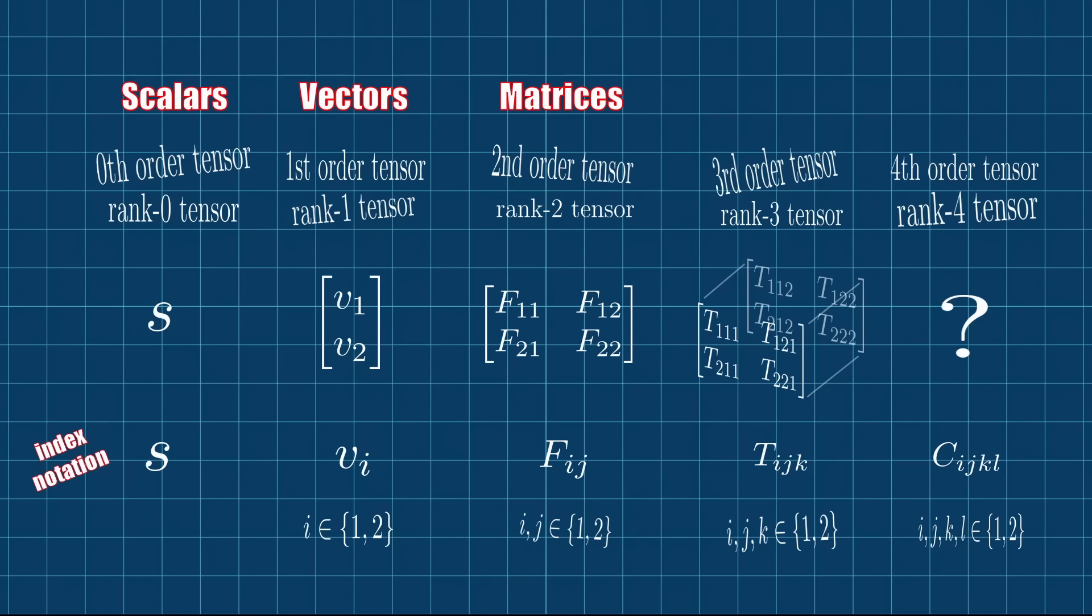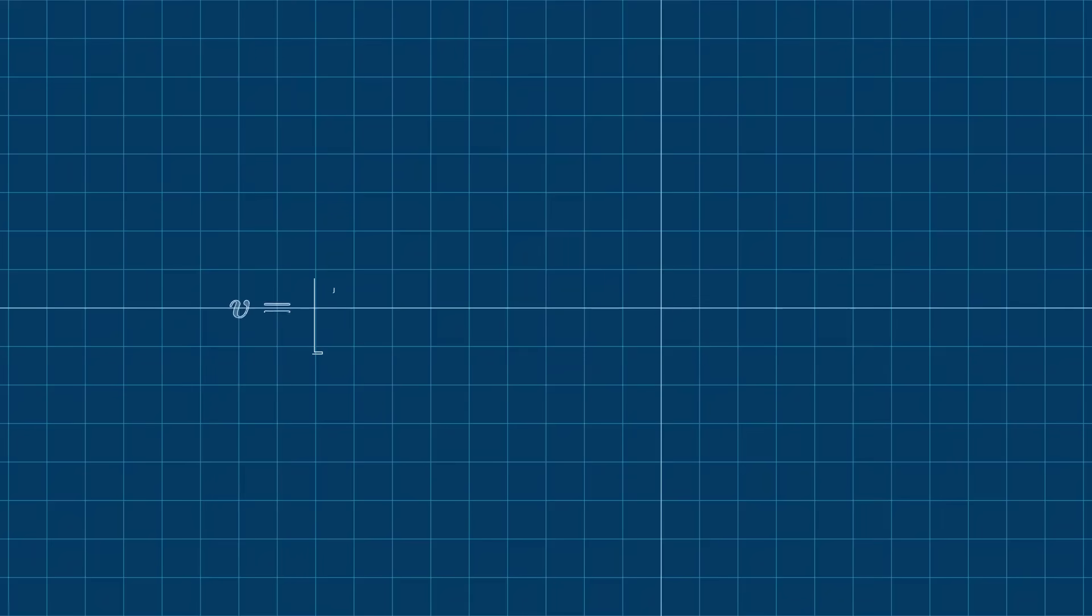But this doesn't tell the whole story. There's a second, probably more important reason why tensors are more than just higher-order matrices. And this is best explained with an example. Let's consider this vector, which, as I said, can be interpreted as a first-order tensor. The components of the vector tell us how the vector looks like in a Cartesian coordinate system.